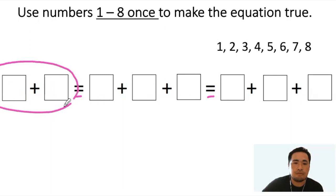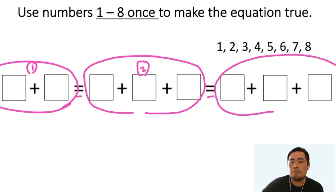So this is the first group. This is the second group. And this is your third group. So in this problem, we want to make sure that the answer for group one equals group two, and also group three.